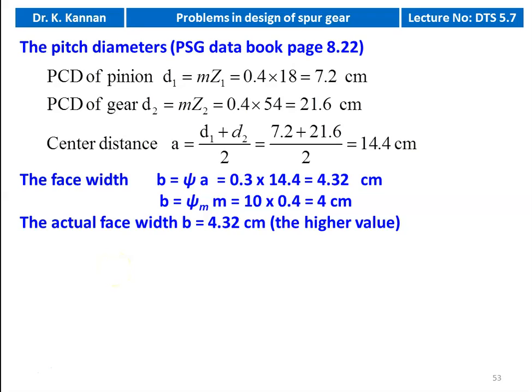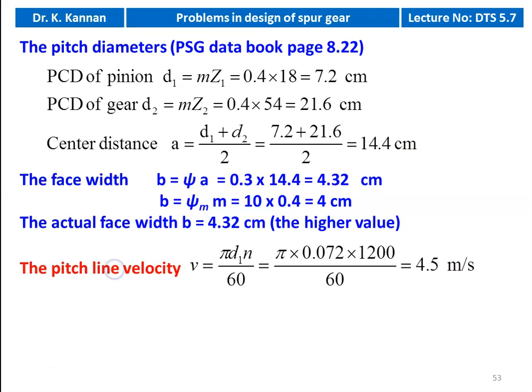Then we calculate the face width. b equals psi into a: 0.3 × 14.4 = 4.32 centimeter. b is also equal to psi_m × m: 10 × 0.4 = 4 centimeter. The higher value is 4.32 centimeter, so the actual face width equals 4.32 centimeter. Now we calculate the pitch line velocity: v equals pi × d1 × n divided by 60 = pi × 0.072 × 1200 divided by 60 equals 4.5 meters per second.